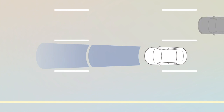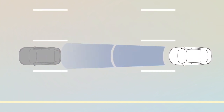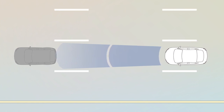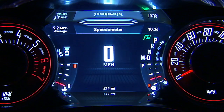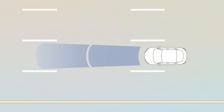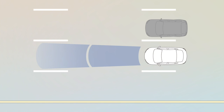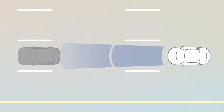The system will now maintain a set distance between you and the driver in front of you without having to constantly reset your speed. The increase and decrease distance buttons let you change the distance between you and the driver in front of you. If there's no driver ahead, your set speed will be unaffected. But when a slower-moving driver enters your lane, the system automatically adjusts your speed to maintain the distance setting.